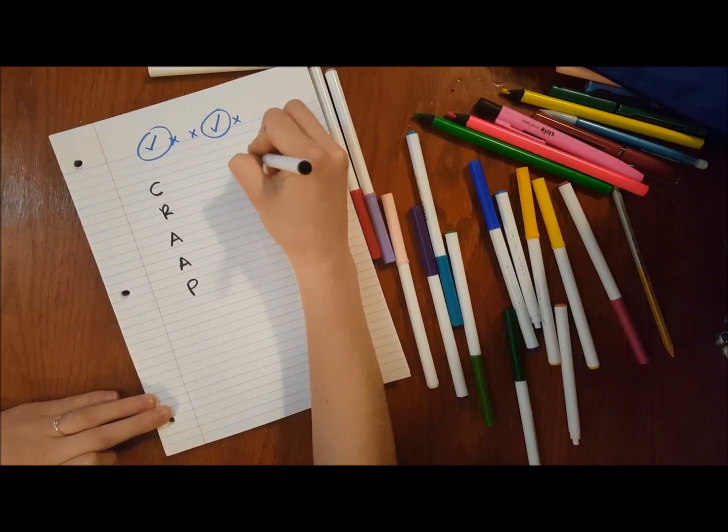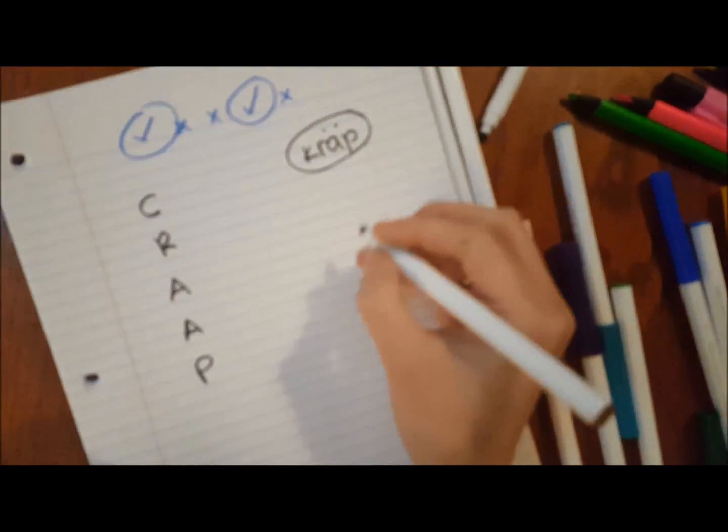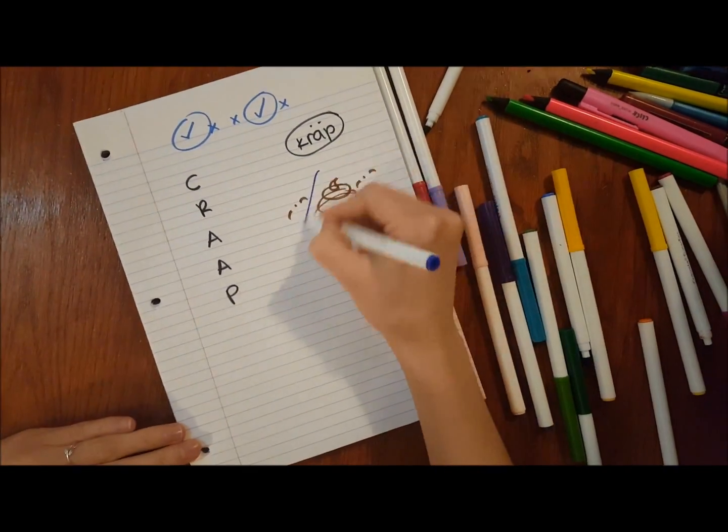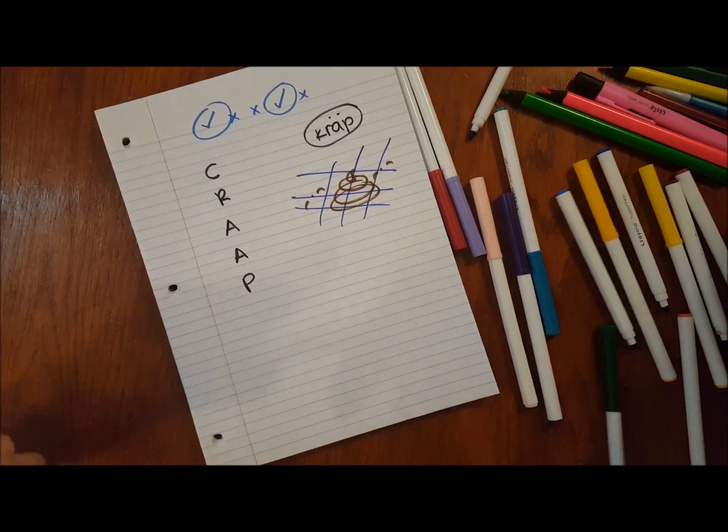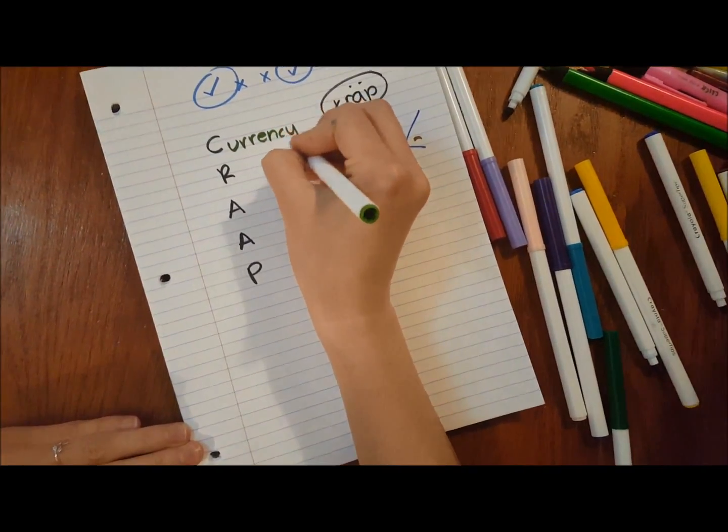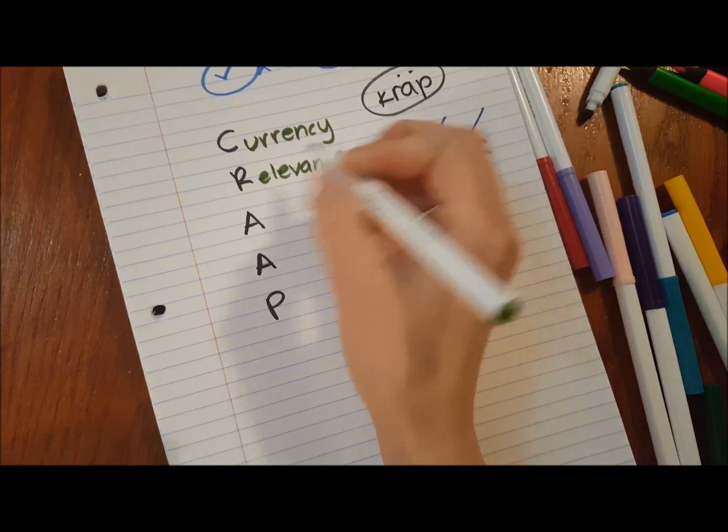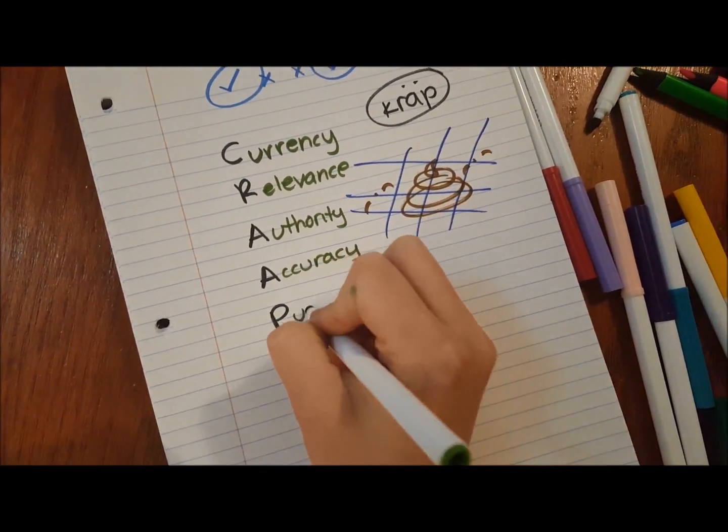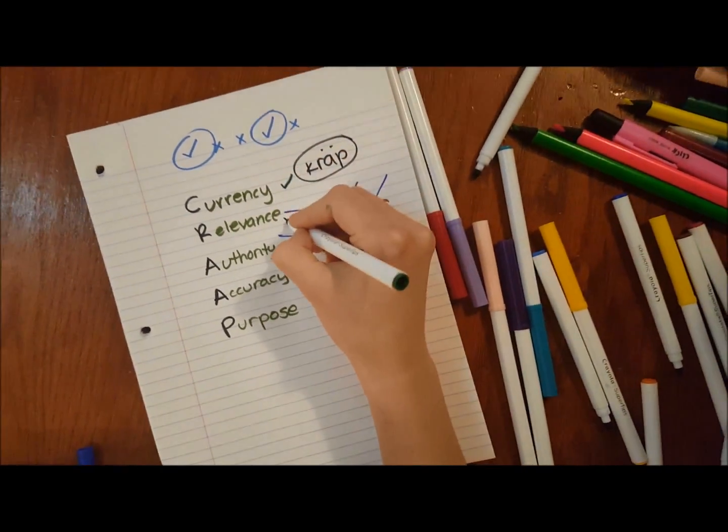One of these is the CRAAP test. CRAAP is the proper way of pronouncing it, but if calling it the crap test helped you remember it better, why not? It is used to filter out crappy information, after all. CRAAP is an acronym that stands for currency, relevance, authority, accuracy, and purpose. Identifying each of these aspects will help you to determine whether a given source is dependable or not.